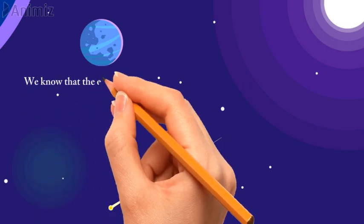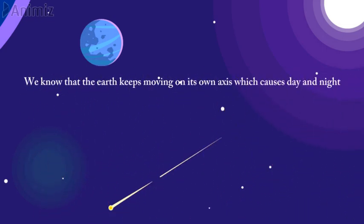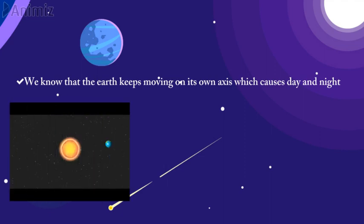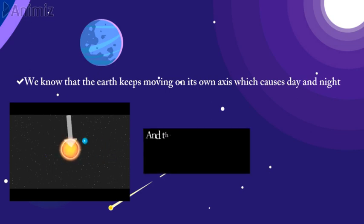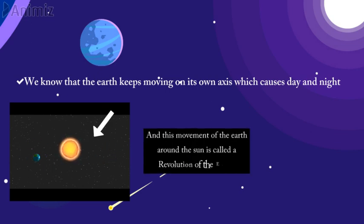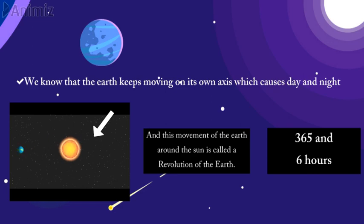Well we know that the earth keeps moving on its own axis which causes day and night. The earth also keeps moving in an imaginary path around the sun. And this movement of the earth around the sun is called a revolution of the earth. Now do you know how much time the earth needs to complete a revolution? That is 365 days and 6 hours.